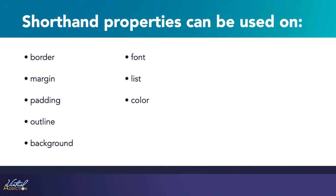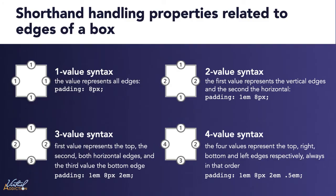For this section of the course, we will discuss shorthand properties in regards to how they relate to the box model. These will be things like padding, margin, borders, outline, and we'll also look at shorthand properties for lists as well as for the background property. In regards to the box model, you'll need to understand a few handling properties in how they relate to the edge of the box. These are properties like margin, padding, and border style, which will always use a consistent one-to-four value syntax representing those edges.